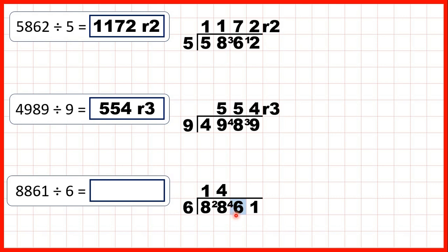Now we have 46 divided by 6. The closest number to 46 in the 6 times table which is still not more than 46 is 42. 7 times 6 is 42, but we need 4 more from 42 to get to 46. To check: 7 times 6 is 42, plus 4 is 46.